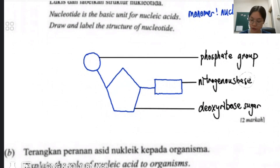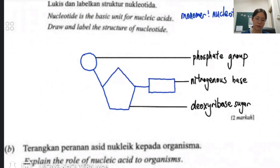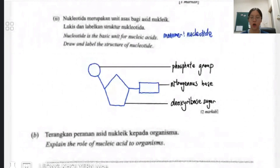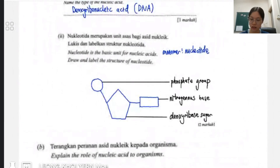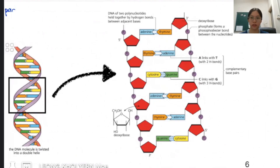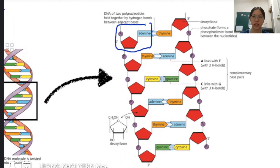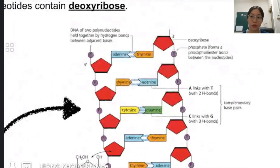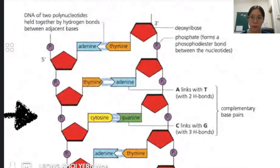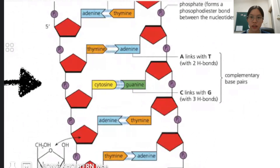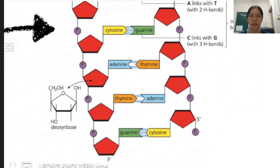For your information, what we just drew is a monomer — the nucleotide. The full DNA structure looks like this — you can see that the monomer is the smallest, most basic unit, the nucleotide, which is the monomer of nucleic acid. When you zoom in, you are basically drawing one of these monomers. They join together in this way.